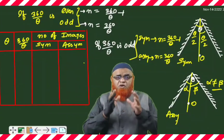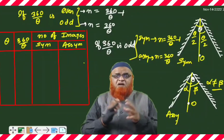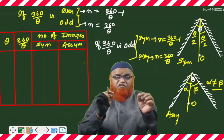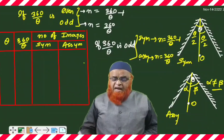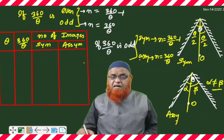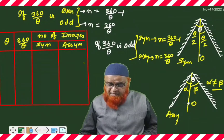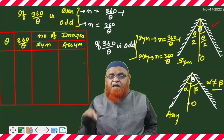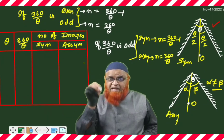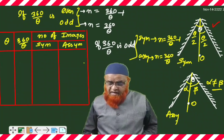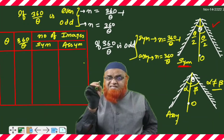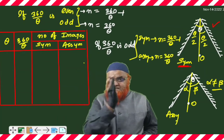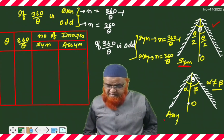Students, today I would like to give you a shortcut table for the number of images formed due to two mirrors having a certain angle. There are two cases here. The first case is where the object is kept exactly at the bisector of the two angles — that is considered symmetry. In the next case, the object is kept a little bit aside from the bisector, and that is called the asymmetry case.